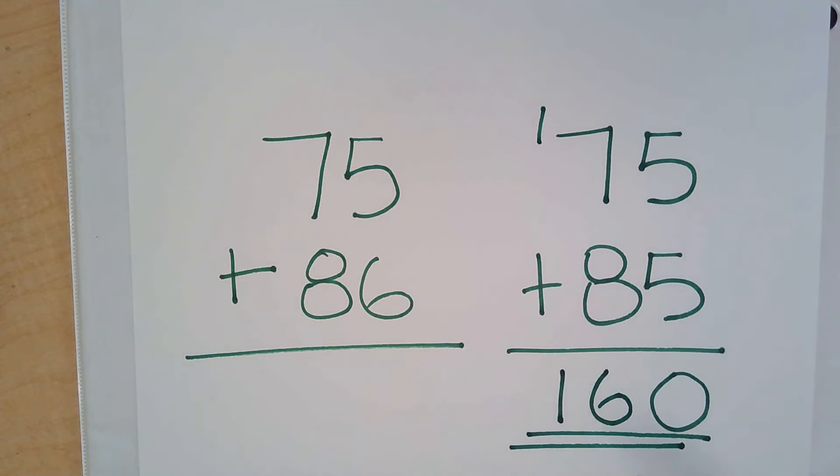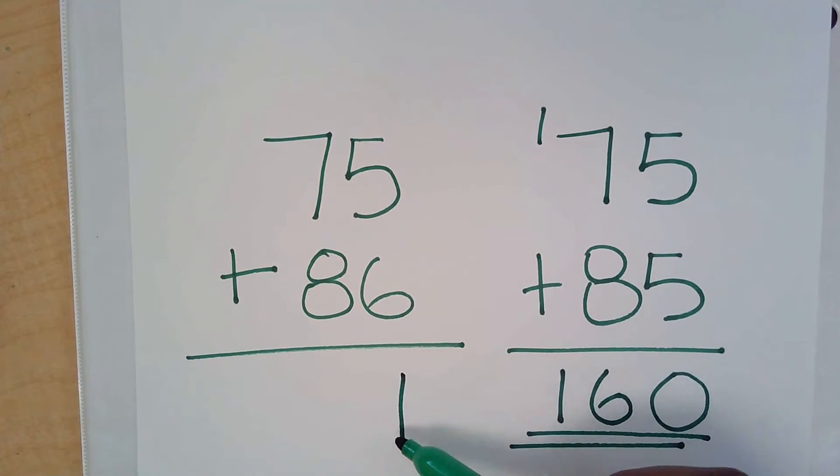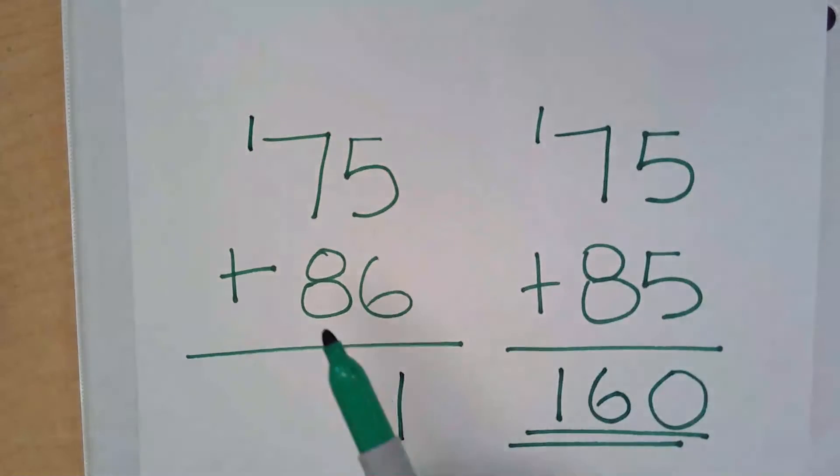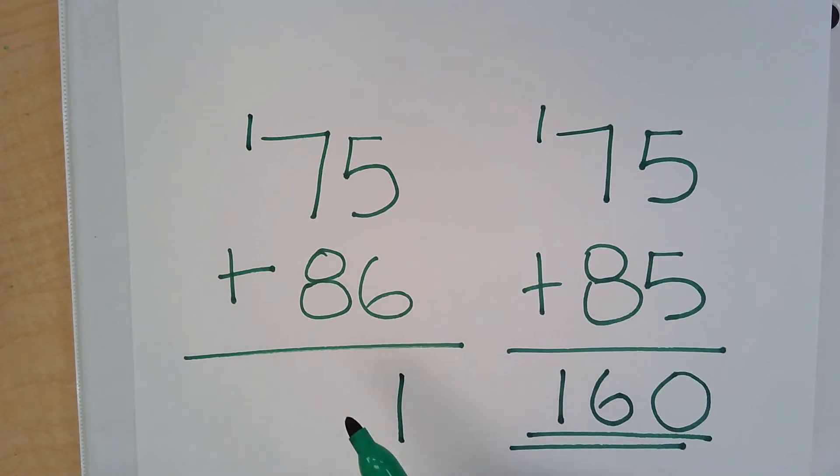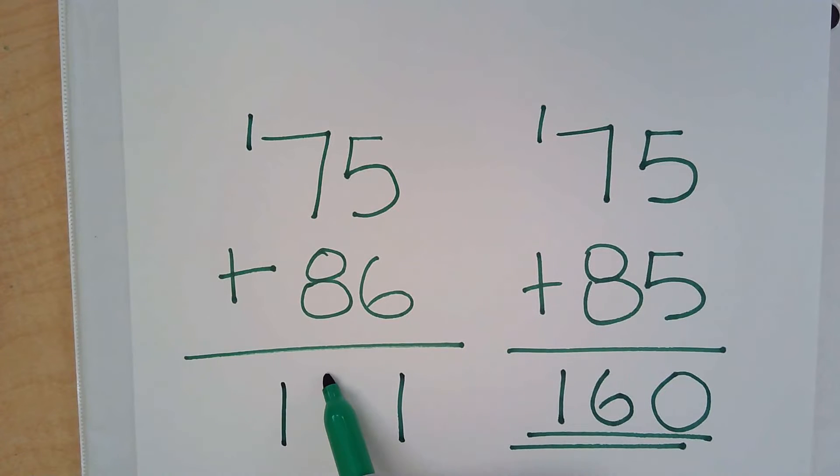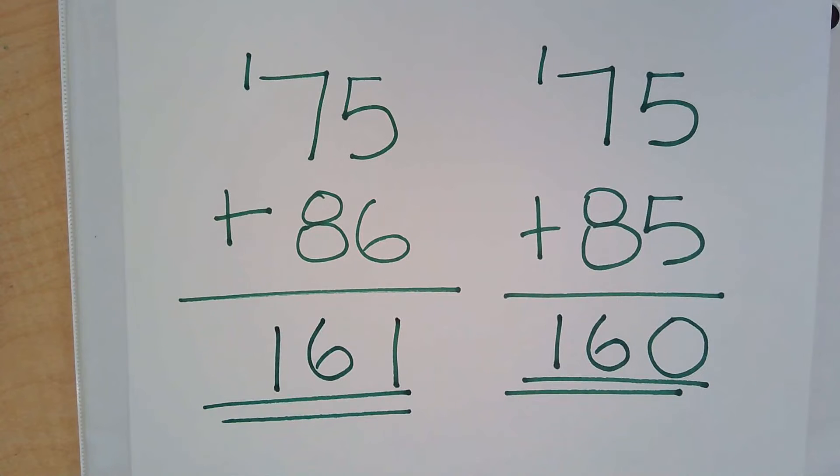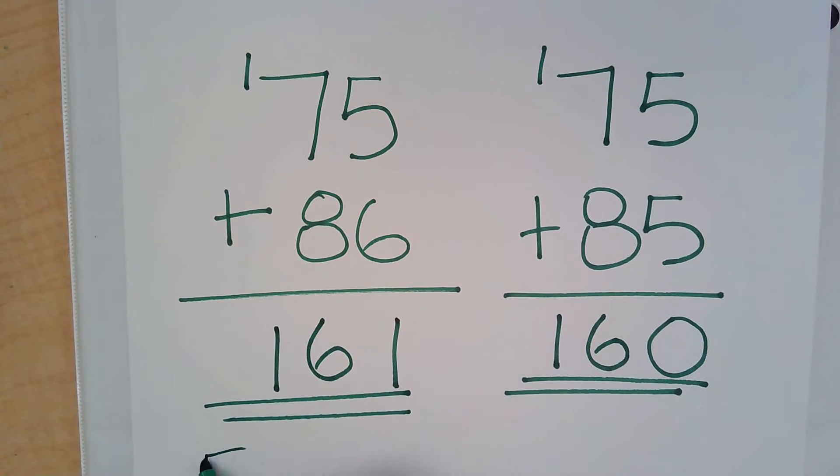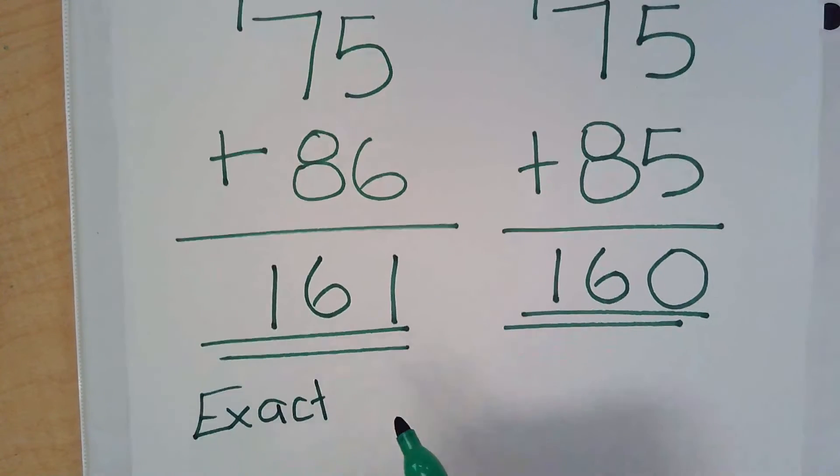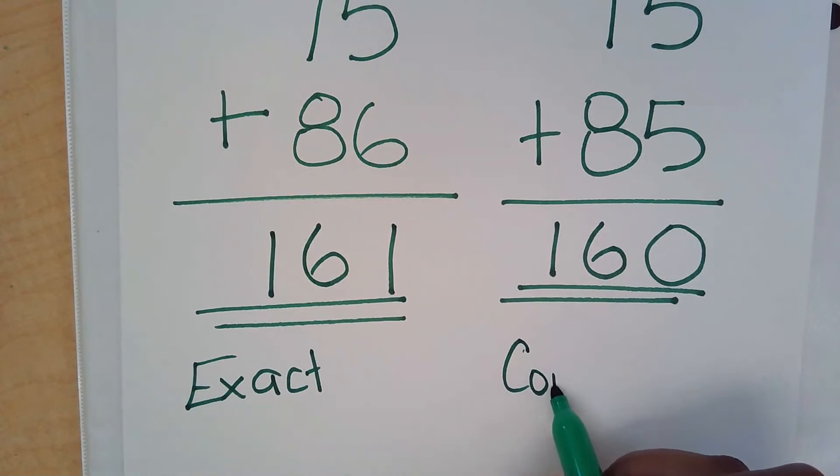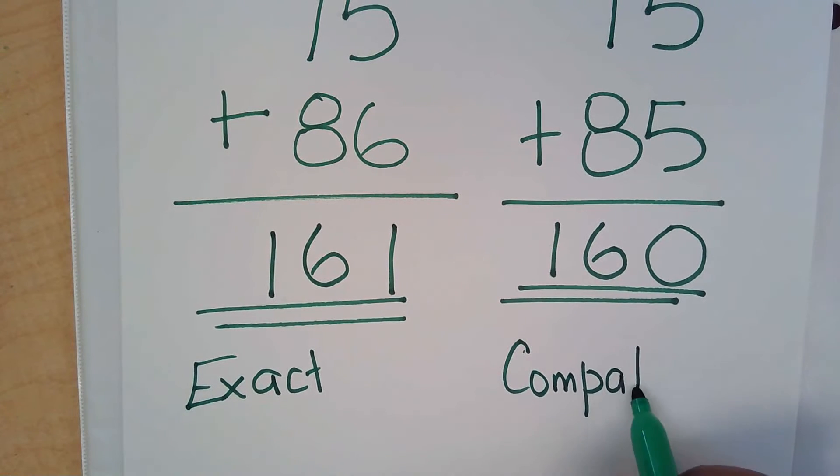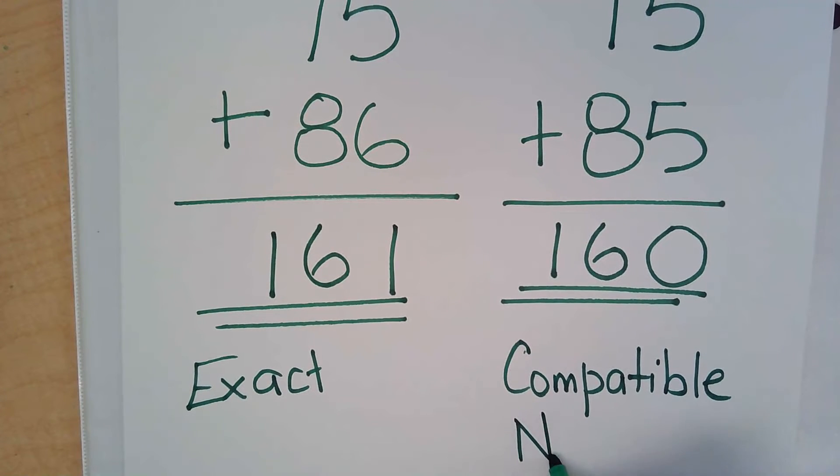We could go ahead and solve this to see if our compatible answer is close to the exact answer here. 5 plus 6 is 11, and I carry my 1. 7 plus 1 is 8. 8 plus 8 is 16. And we have 161. So look at that. This is for the exact, and this is for compatible or using compatible numbers.